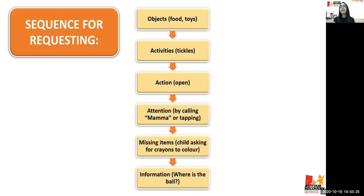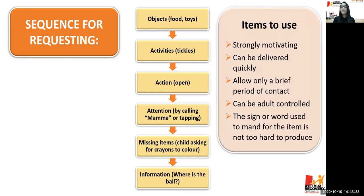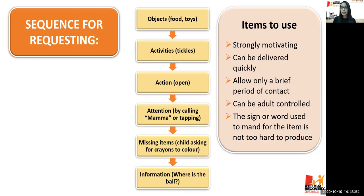The last category of requesting includes information — WH questions like 'where is the ball?' or 'what is this?' Items used should be strongly motivating, can be delivered quickly, allow only a brief period of contact, can be adult-controlled, and the sign or word used for requesting should not be too hard for the child to produce.